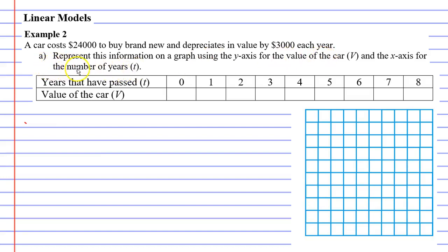Question A says represent this information on a graph using the y-axis for the value of the car, V, and the x-axis for the number of years, T. And we can see these two variables in our table here, the number of years that have passed, T, and the value of the car, V.